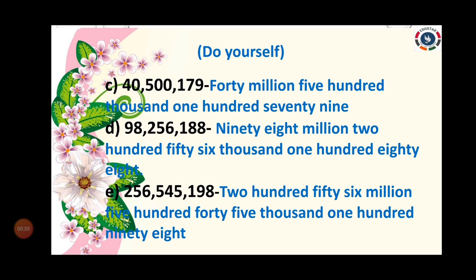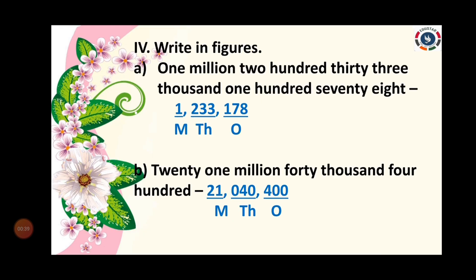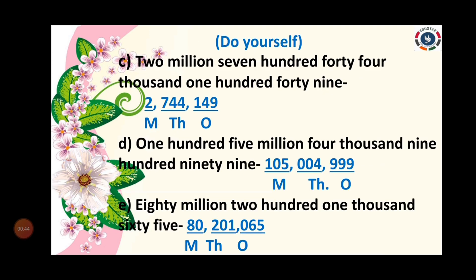Check your answers with the spelling. And Domulator 4 — write in figures. I gave the answer for the first two sums and the next three you did yourself. Now check. C: 2,744,149. D: 105,4999. E: 80,201,065.